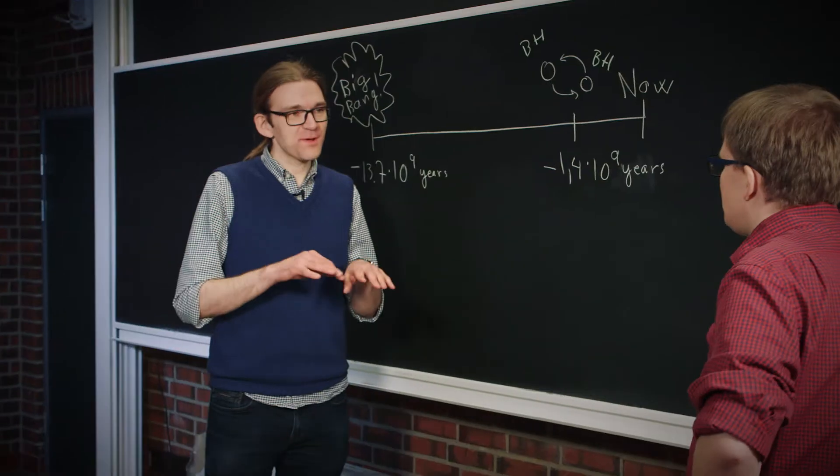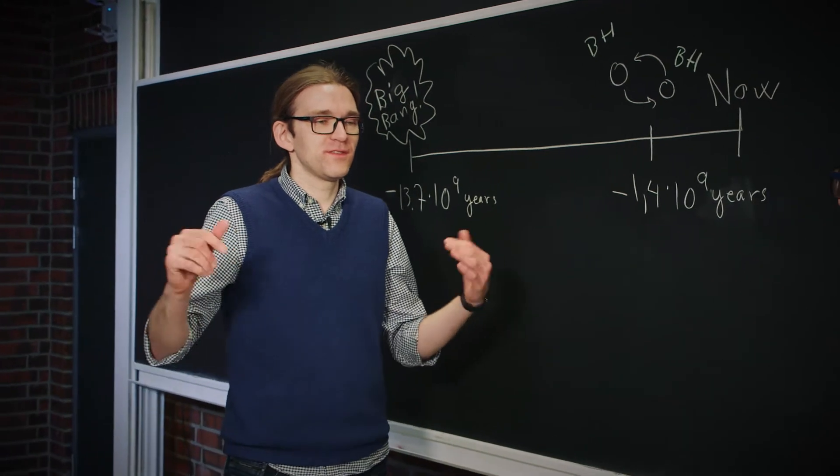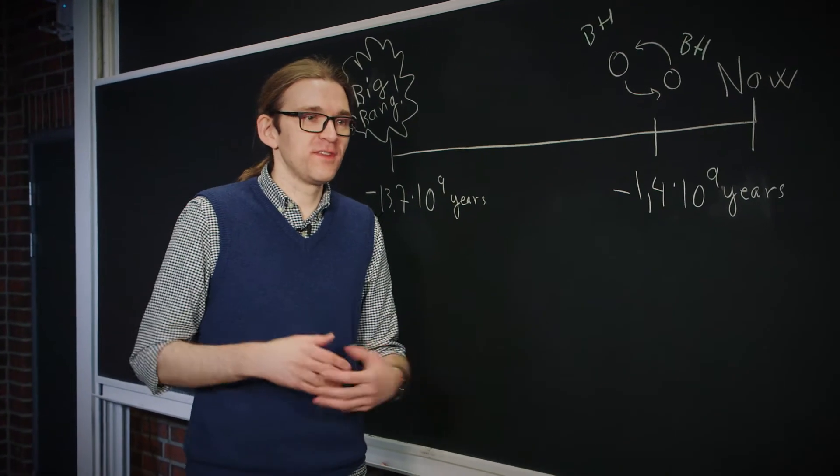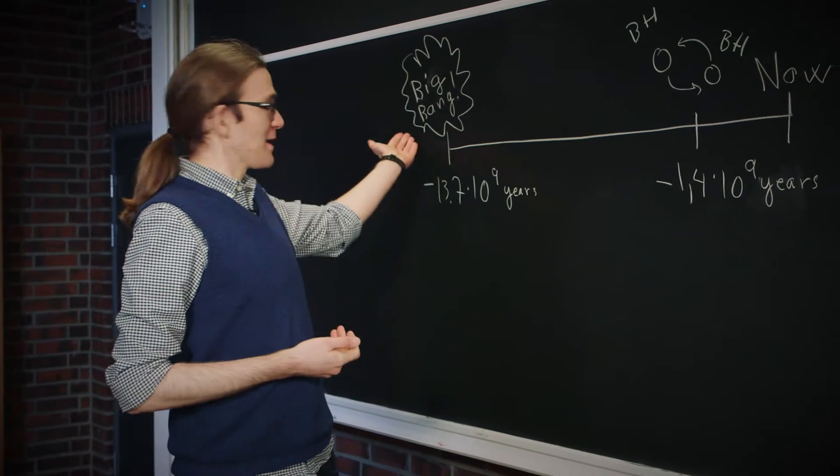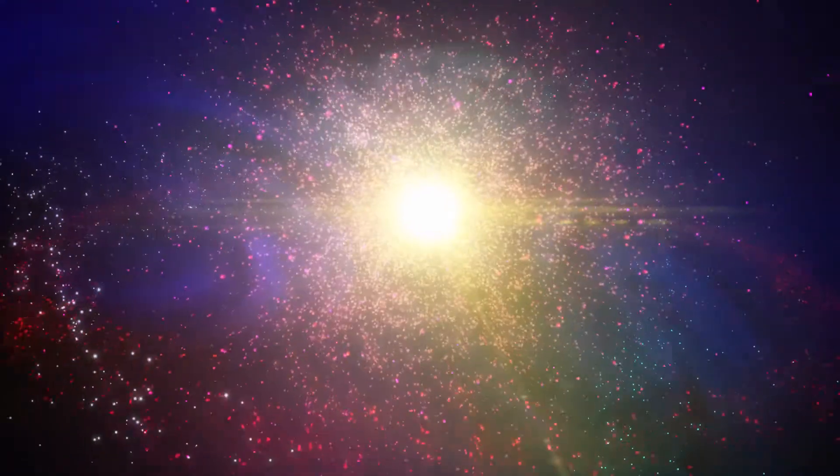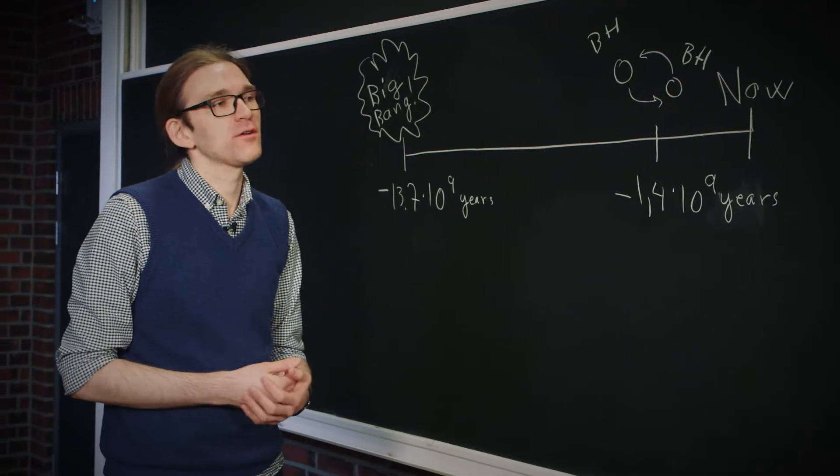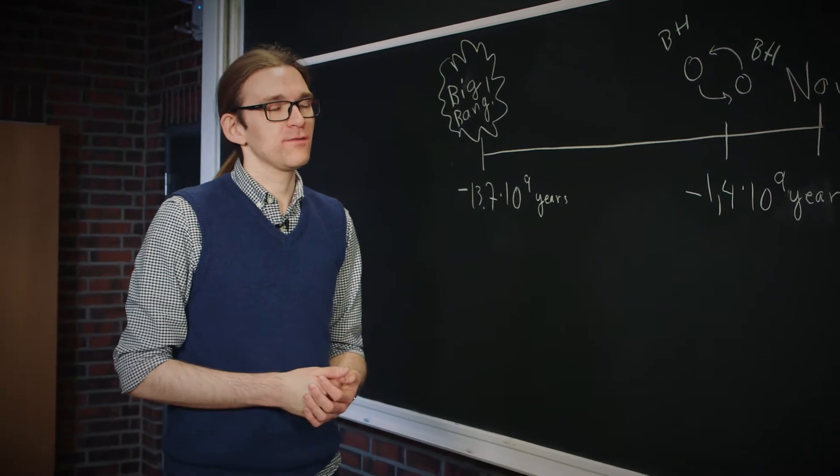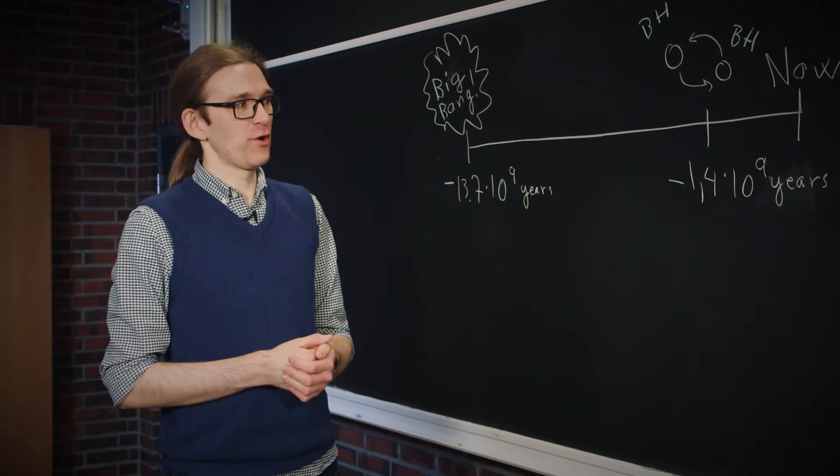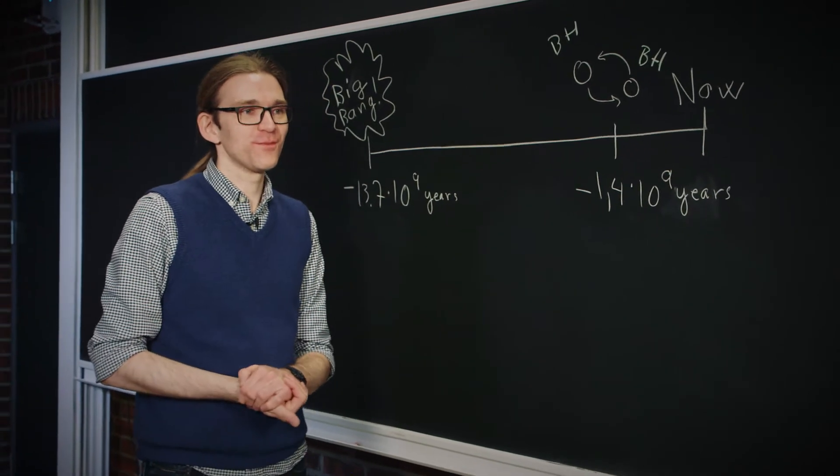So gravitational waves, what are they again? The easiest way to think about them is as ripples in space-time. So space and time itself are distorted and they propagate towards us from events in the early universe, like at the Big Bang, or alternatively from things like black holes merging, or supernovae or neutron stars merging, which happened a bit later on, closer to Earth and closer to now.